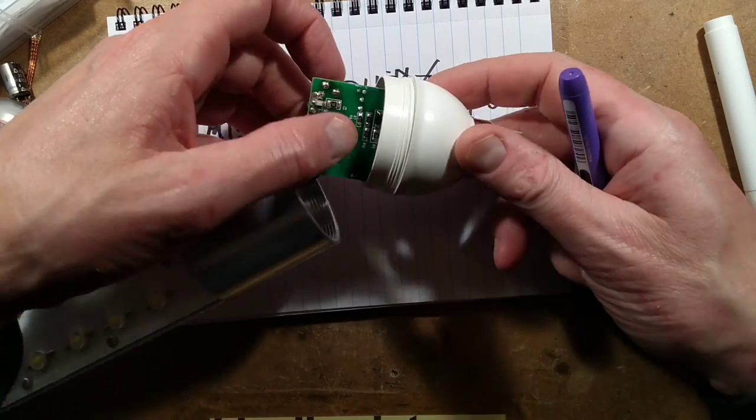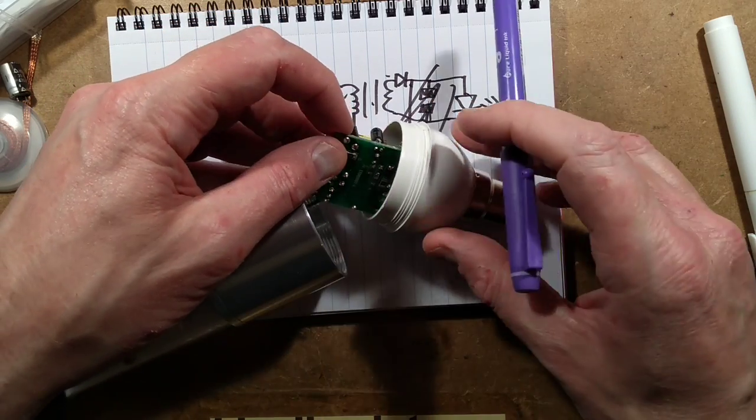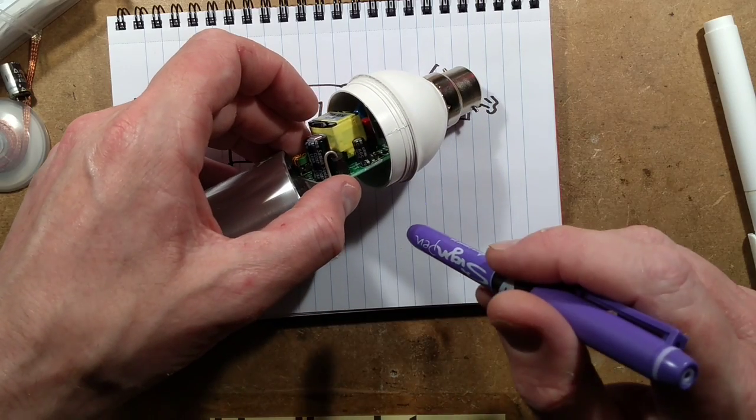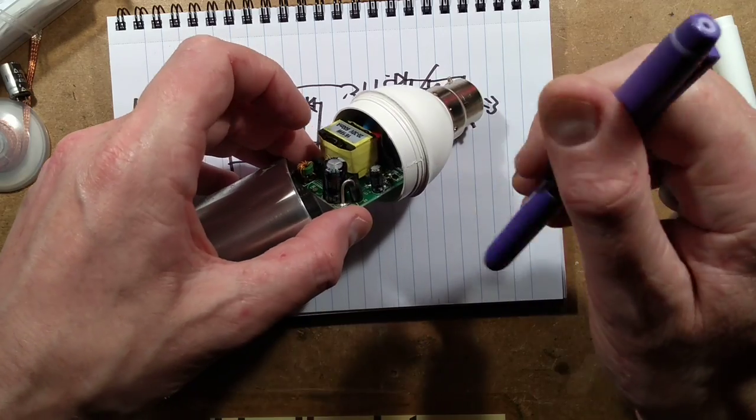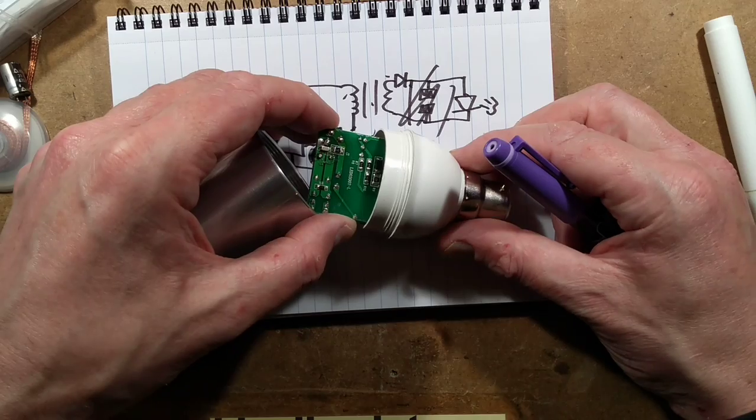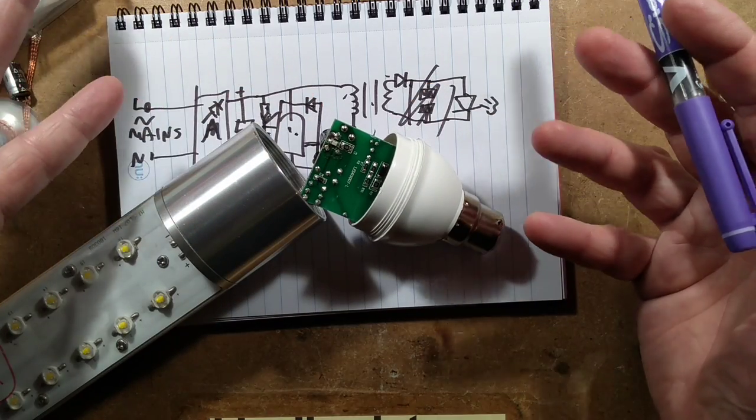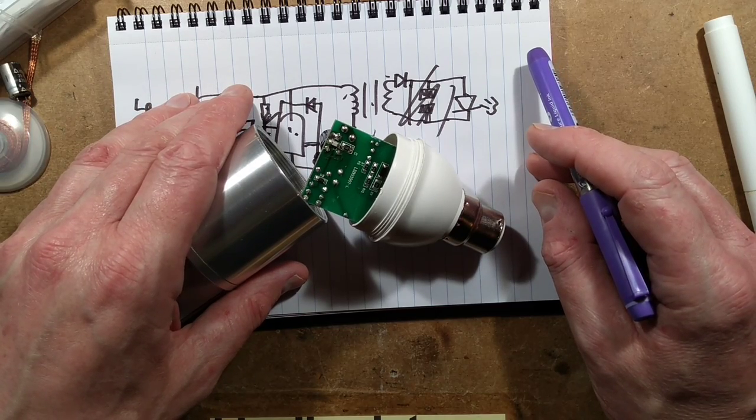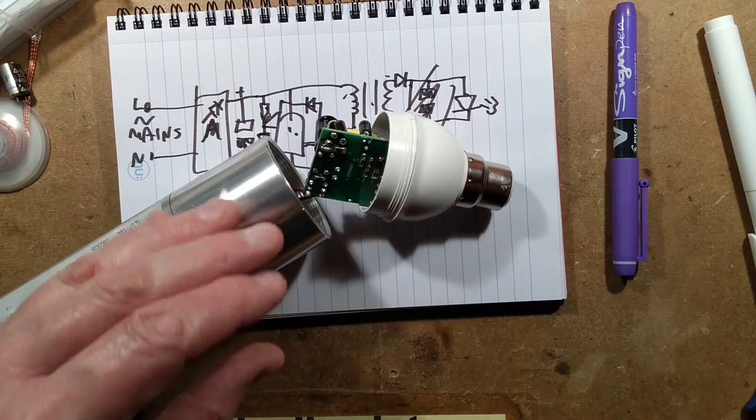So looking at this, I can see various components. I can see the snubber network. I can see this capacitor here, which looks like the bootstrap capacitor with a little diode there. That diode could have failed, or this capacitor could have failed. They're two fairly simple, cheap components. I'm going to see if I can find replacements for those.